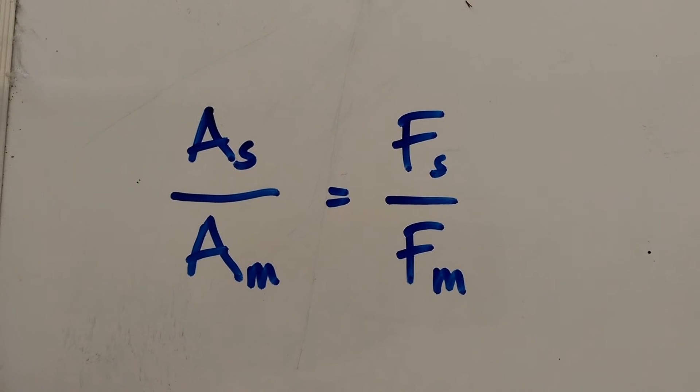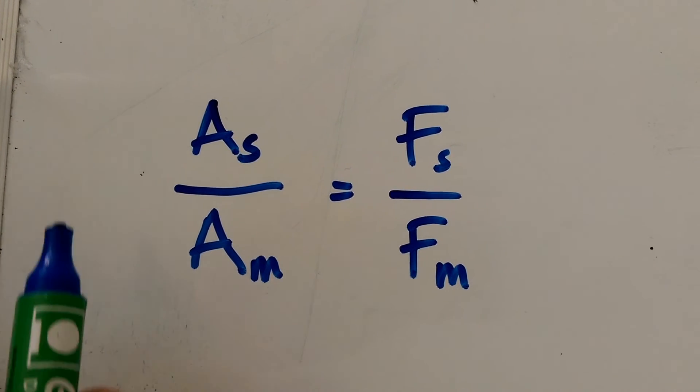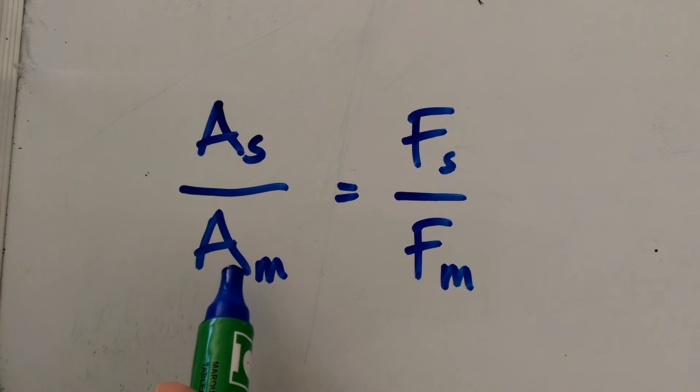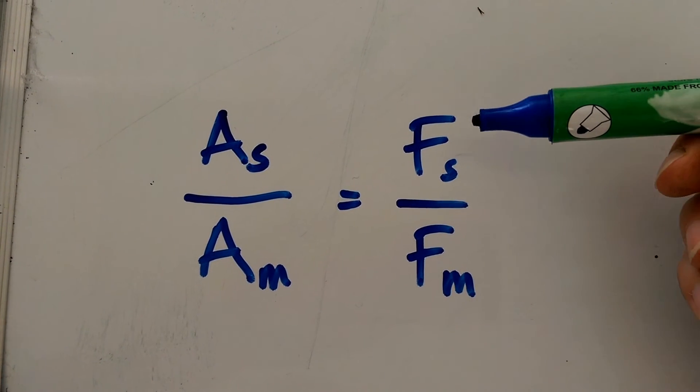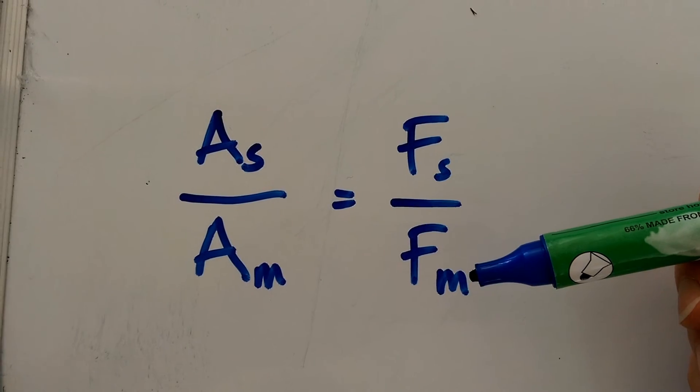Here in algebra is a really simple way of expressing that. The area of the slave piston over the area of the master piston is equal to the force on the slave divided by the force on the master.